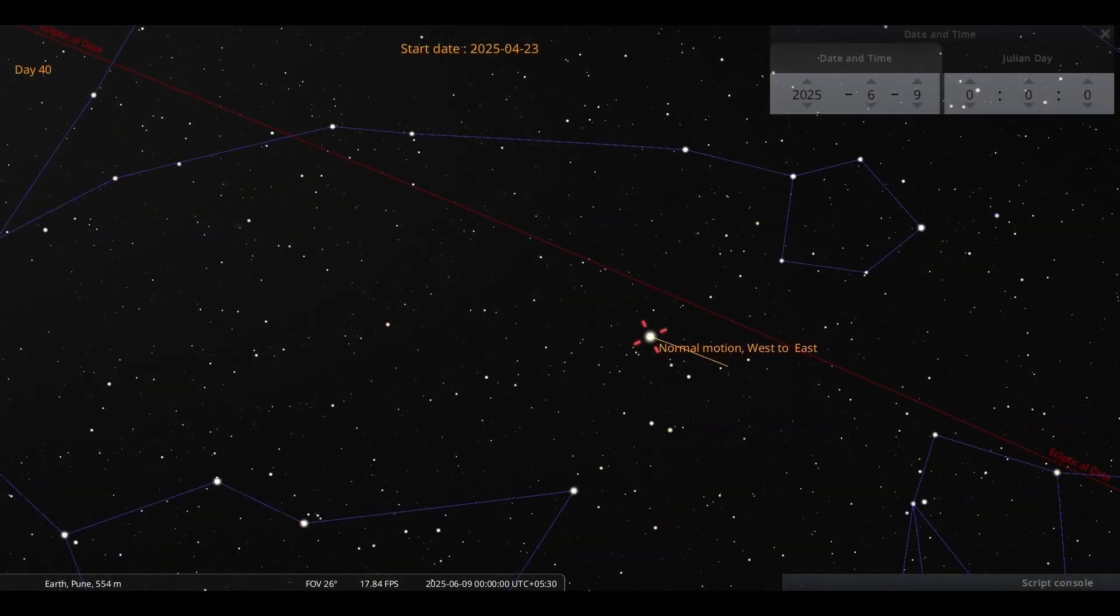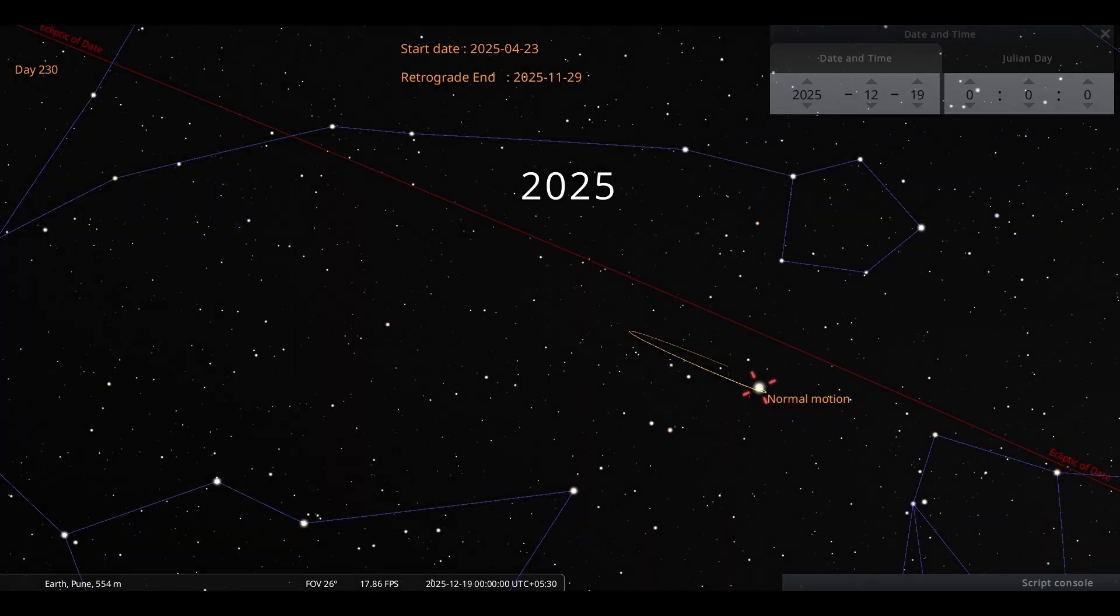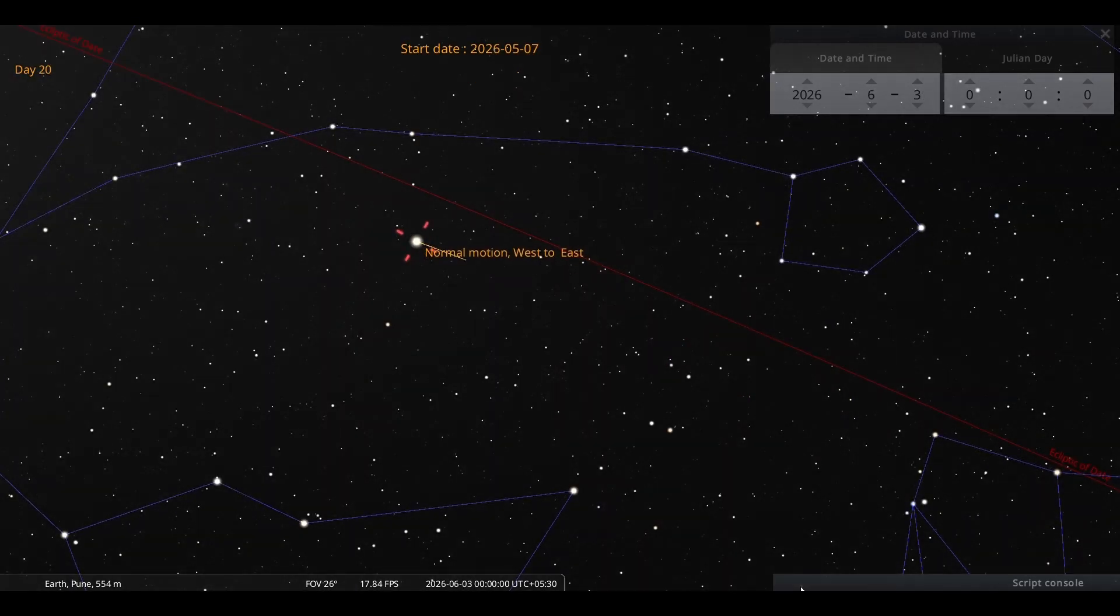We can view the same in the Stellarium software as well. Saturn is seen every day at midnight against the backdrop of stars. Red line indicates the ecliptic, while in the backdrop Pisces constellation can be seen.